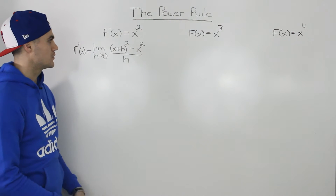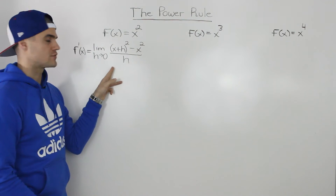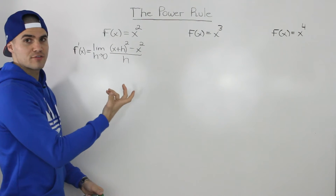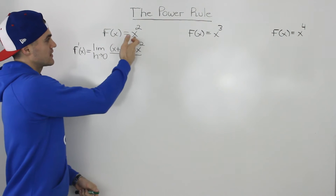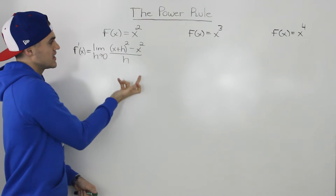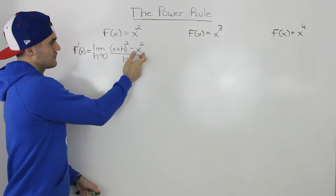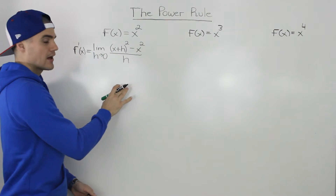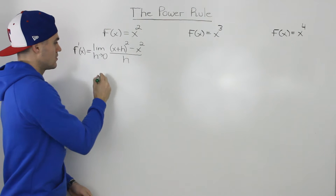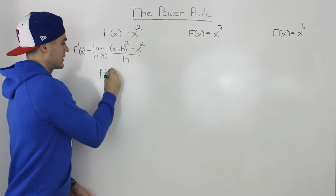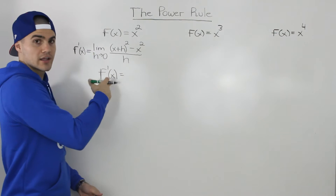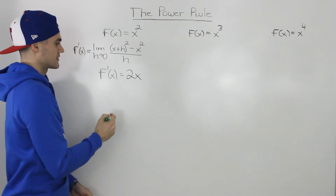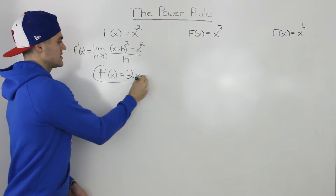To find the derivative of x squared, we put it into the definition of a derivative — the difference quotient. So we get the limit as h goes to 0 of f(x+h), but since f(x) = x², f(x+h) is (x+h)², minus f(x) which is just x², all over h. If you do the algebra, cancel out the h's, and plug in 0 for h, you end up with 2x.